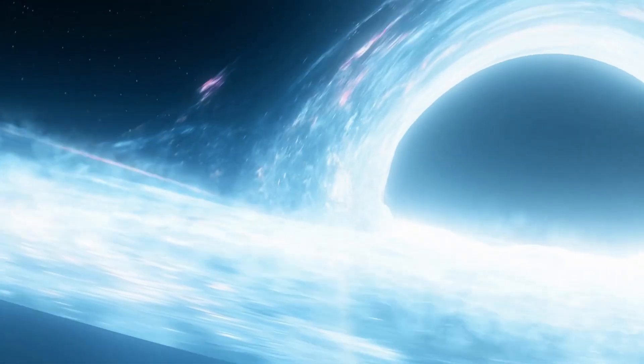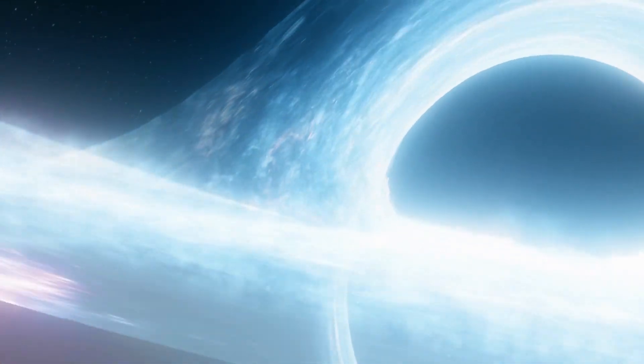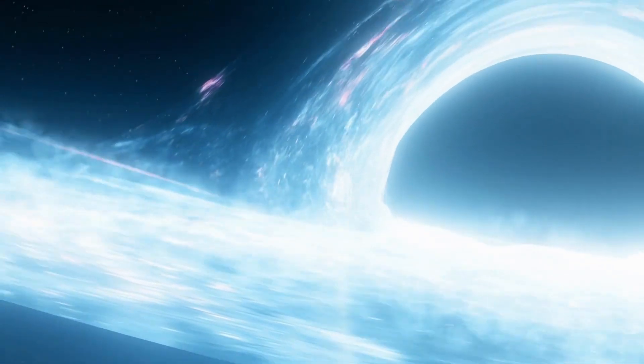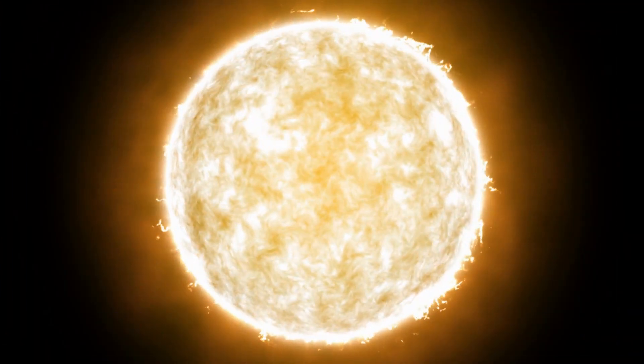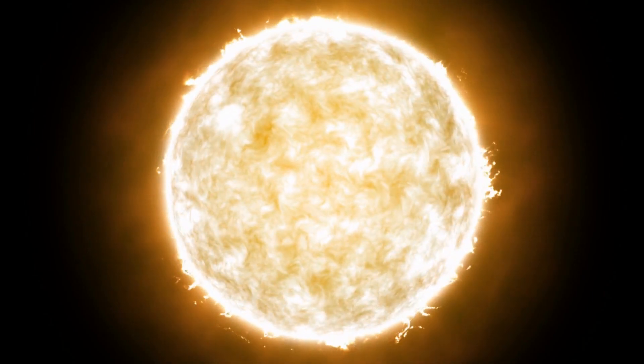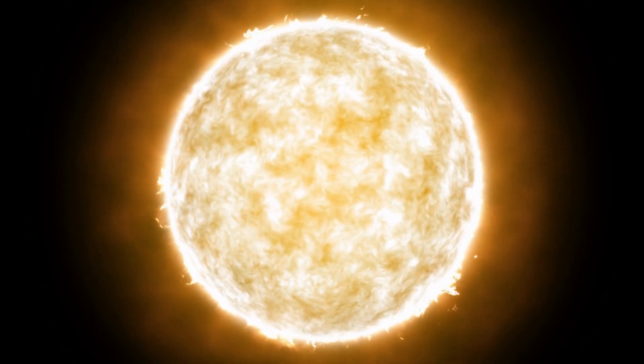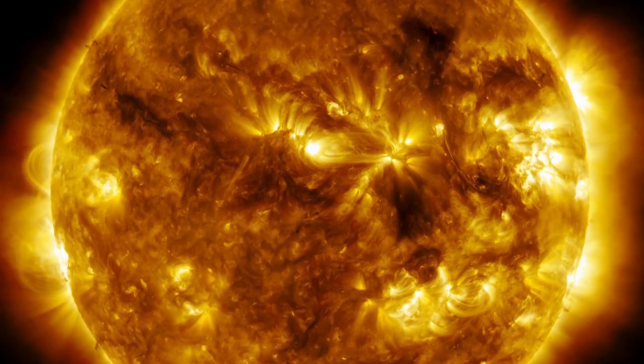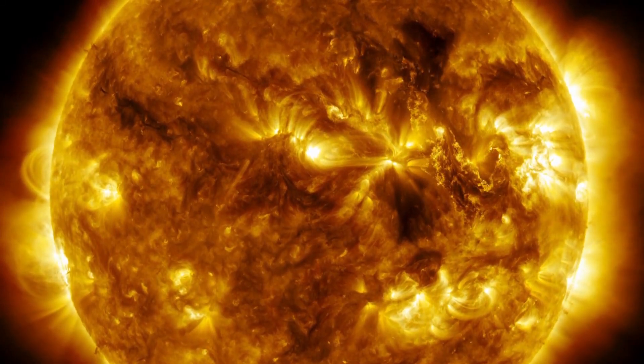To understand how black holes formed and what happens inside them, it is necessary to go back to the life cycle of a massive star. These massive stars are true cosmic powerhouses fueled by the incredible nuclear fusion reactions that take place in their cores. The sun's energy source comes from the fusion of hydrogen and helium.